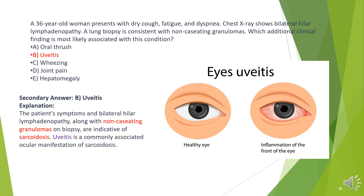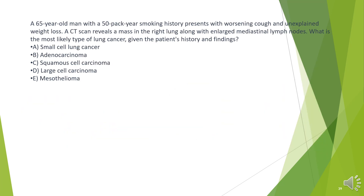The answer is B. Uveitis. The patient's symptoms and bilateral hilar lymphadenopathy, along with non-caseating granulomas on biopsy, are indicative of sarcoidosis. Uveitis is a commonly associated ocular manifestation of sarcoidosis.